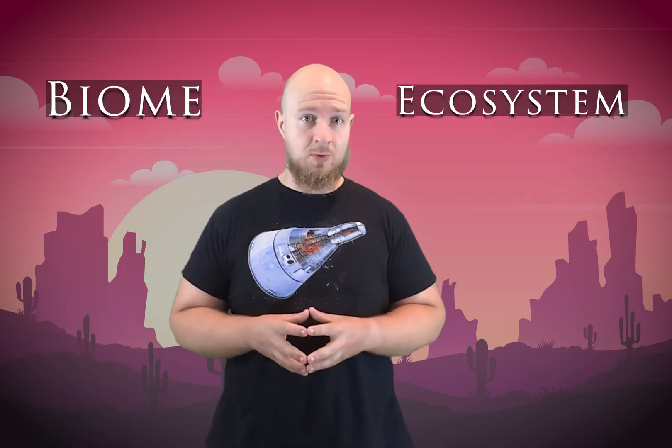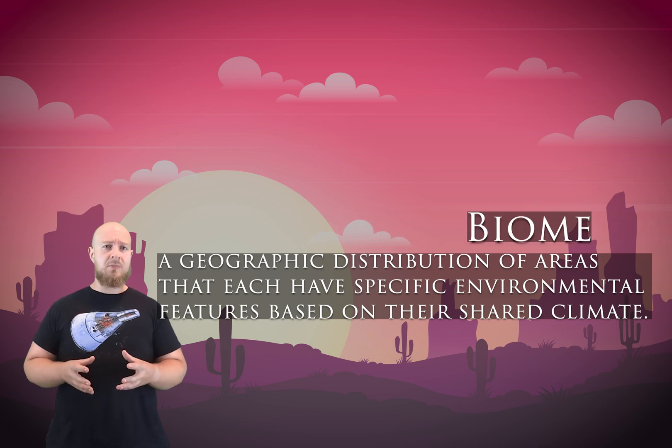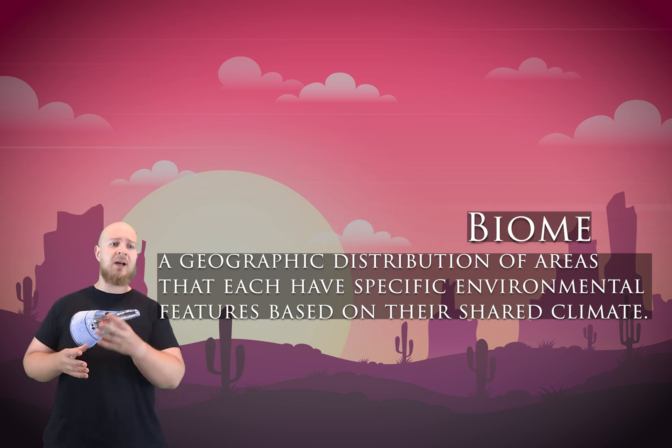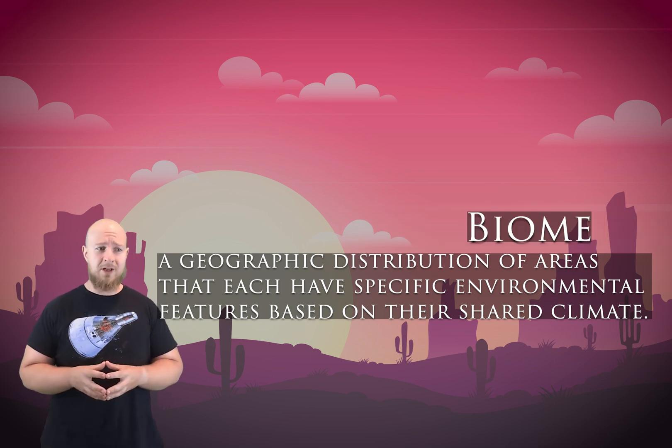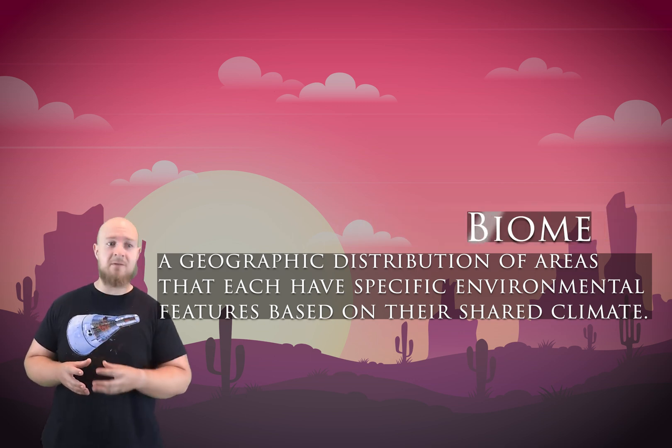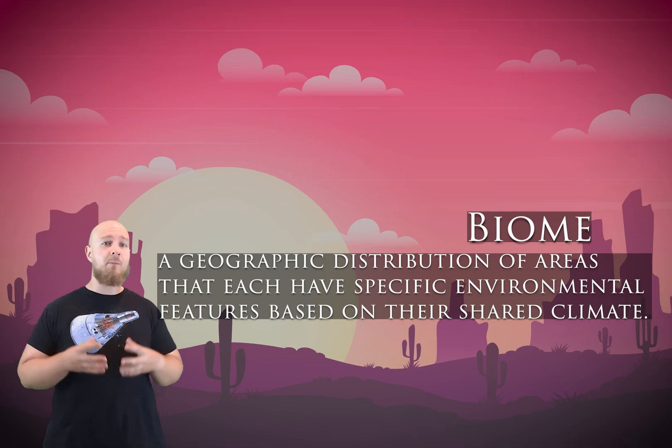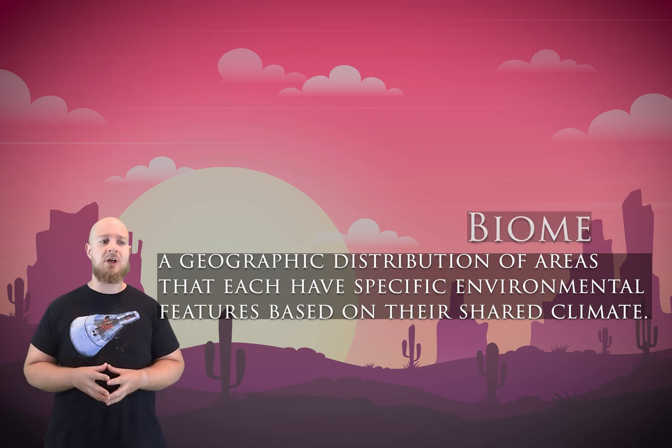You may hear the term biome used interchangeably with ecosystem. A biome is a geographic distribution of areas that each have a specific environmental feature based on their shared climate. However, an ecosystem is a little bit more specific — it's a specific area that's part of a biome, but a bit more regional.